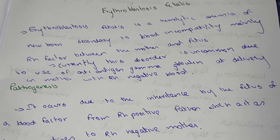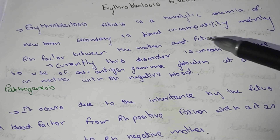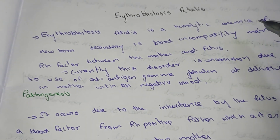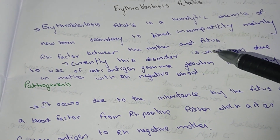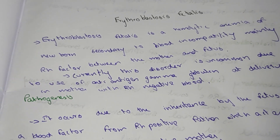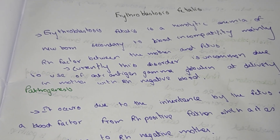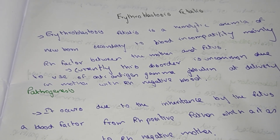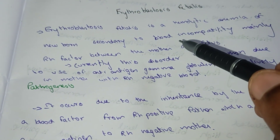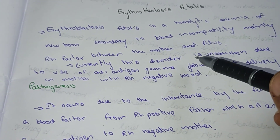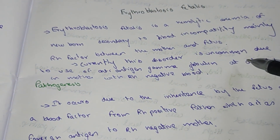Welcome to Medicine YouTube channel. In this video we are going to talk about erythroblastosis fetalis. Erythroblastosis fetalis is a hemolytic anemia of newborn secondary to blood incompatibility, mainly the Rh factor, between the mother and the fetus. Currently this disorder is uncommon due to anti-D gamma globulin given at delivery time.